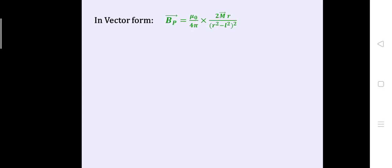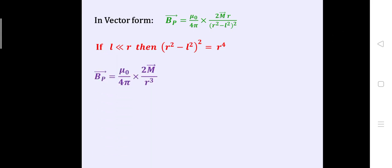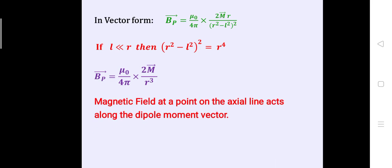If L is much much smaller than r (short dipole), L² is neglected, so (r²−L²)² = r⁴. Thus BP = (μ₀/4π)·(2M/r³). Magnetic field at a point on the axial line acts along the dipole moment vector.